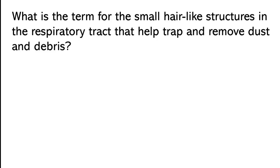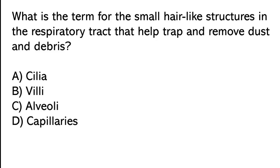What is the term for the small hair-like structures in the respiratory tract that help trap and remove dust and debris? Options: cilia, villi, alveoli, capillaries. The correct answer is option A. Cilia is the term for the small hair-like structures in the respiratory tract that help trap and remove dust and debris.